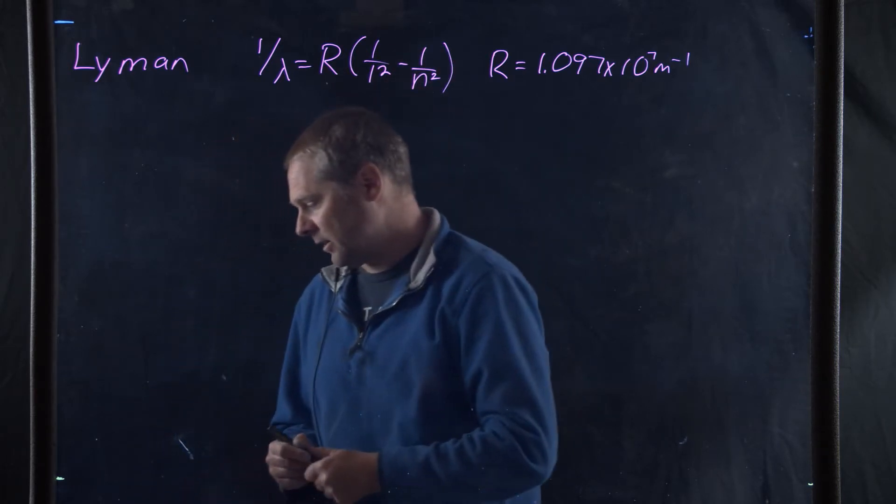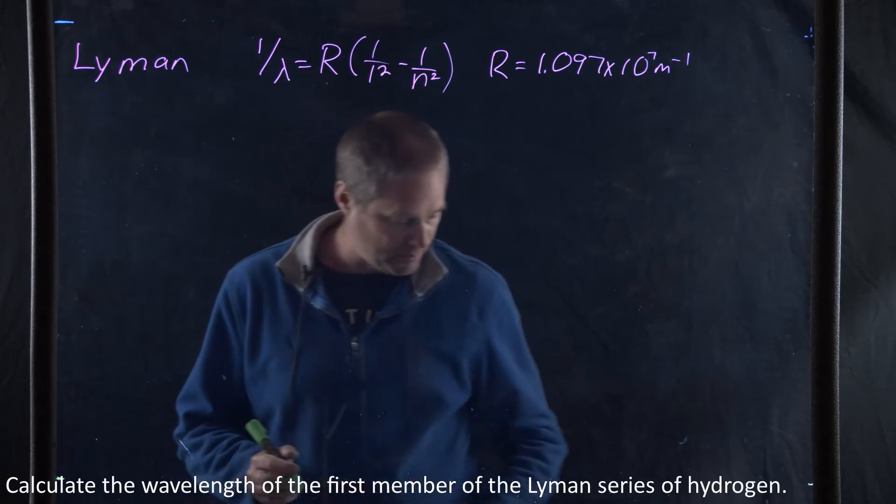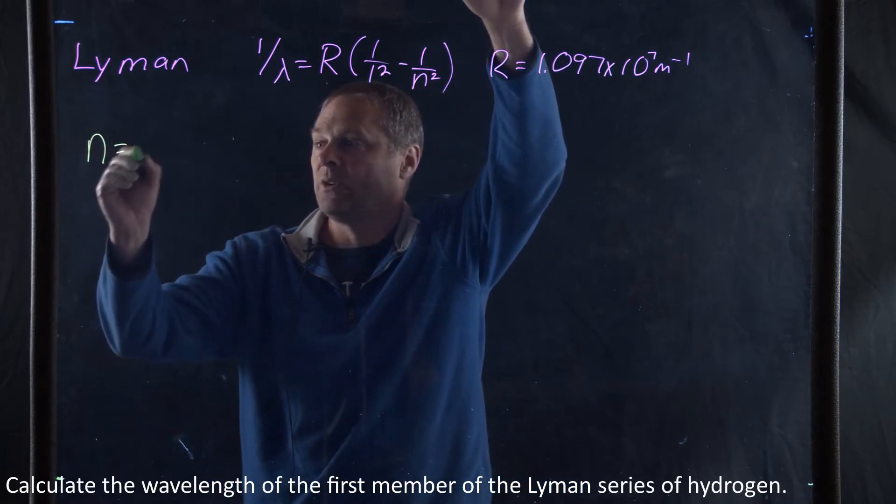So this question says, calculate the wavelength for the first member of the Lyman series of the hydrogen emission spectrum. And in this case, then, our n is going to be equal to 2.